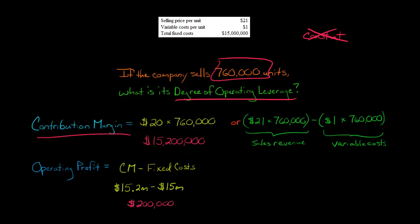So we just calculated the contribution margin. That's $15.2 million. So here's our $15.2 million. But then we have to subtract the fixed costs, which are $15 million. So we subtract the $15 million. And that gives us an operating profit of $200,000.